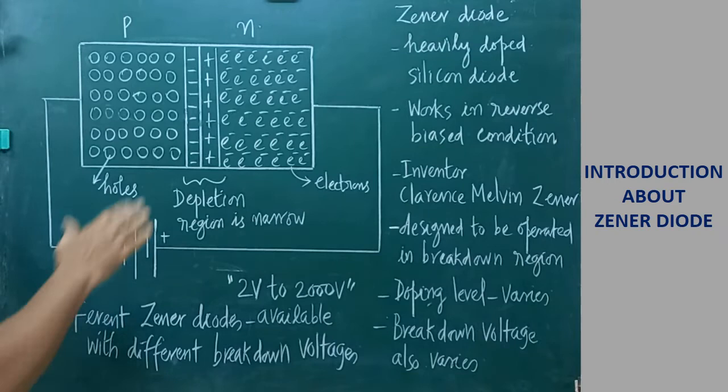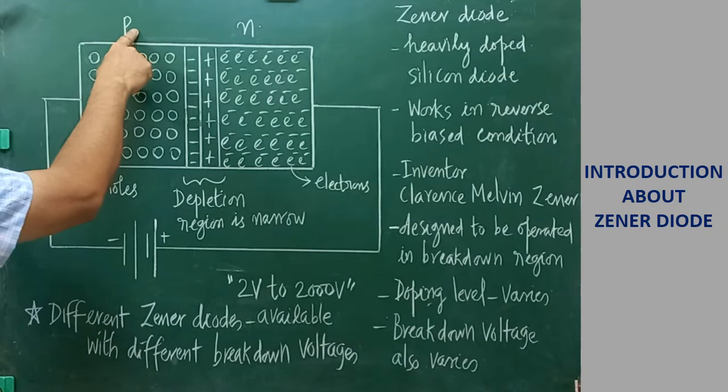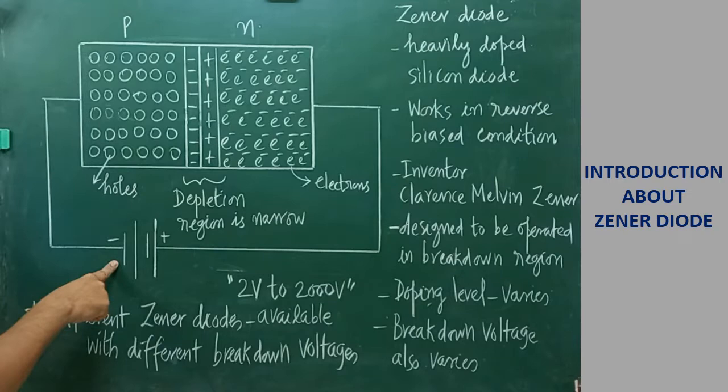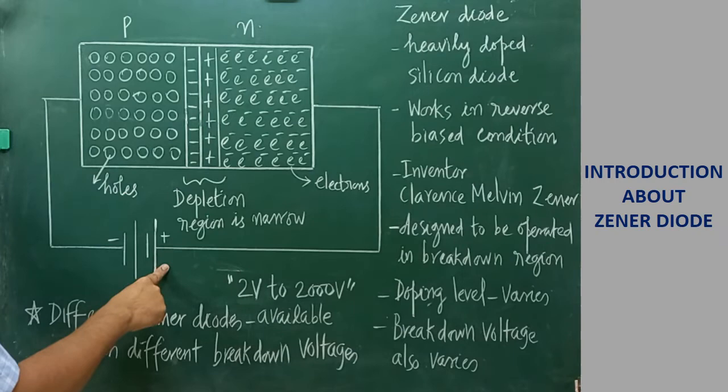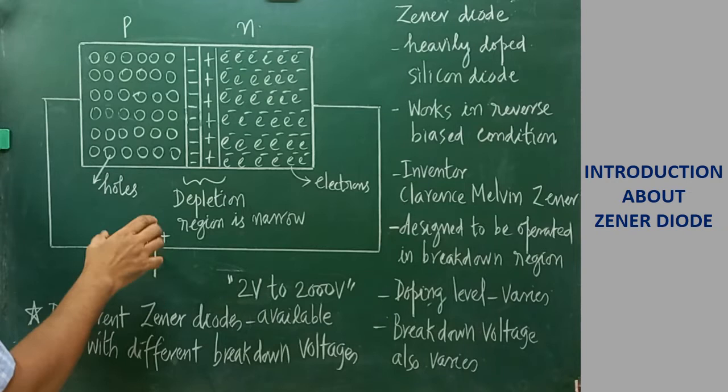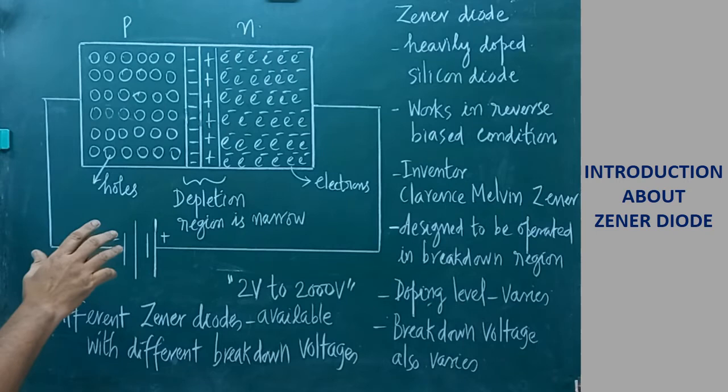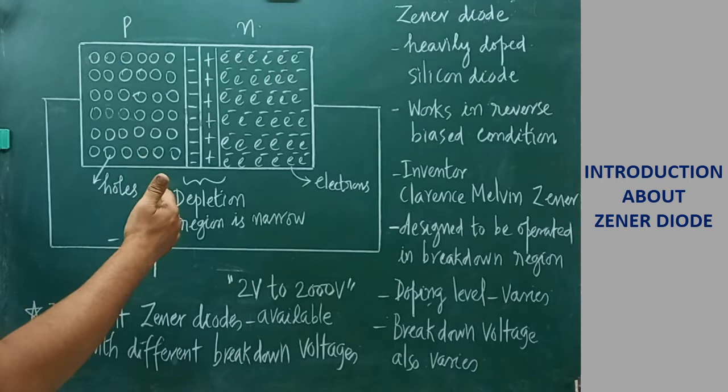This one is working only in the reverse biased condition. The P end of the Zener diode is connected with the negative end of the power supply, and the N end of the diode is connected with the positive end of the power supply. P is connected with negative, N is connected with positive — such kind of biasing is called reverse bias. On the whole, Zener diode is nothing but a heavily doped reverse biased diode.